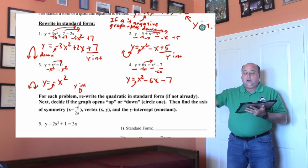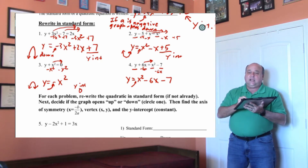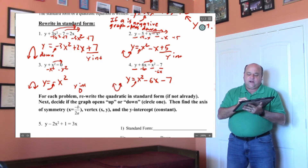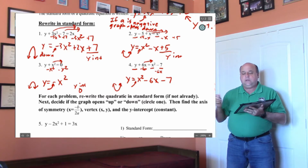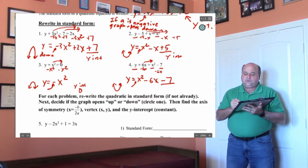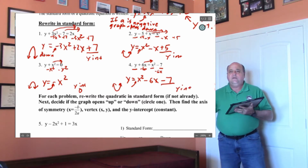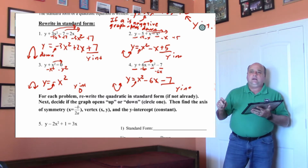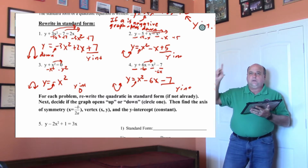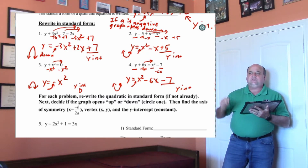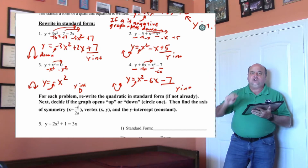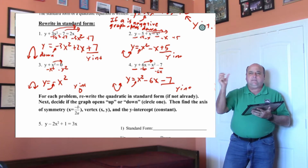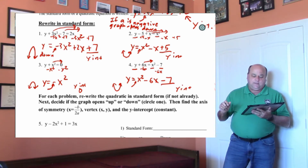On the next one, the x squared is positive, so that graph will open up, and negative 7 will be our y-intercept. Very important concepts from that ax squared plus bx plus c — two big things you've got to know right off the bat.